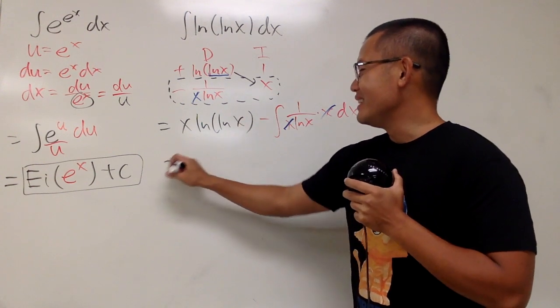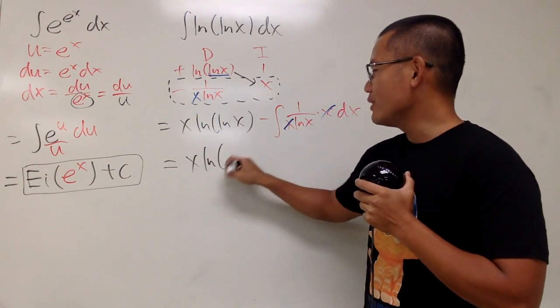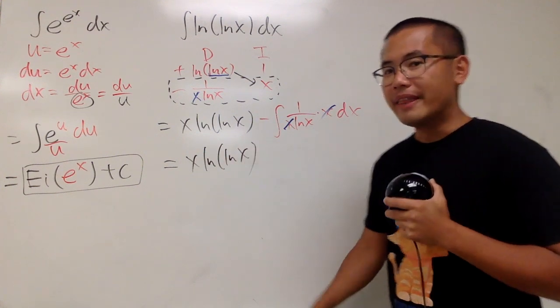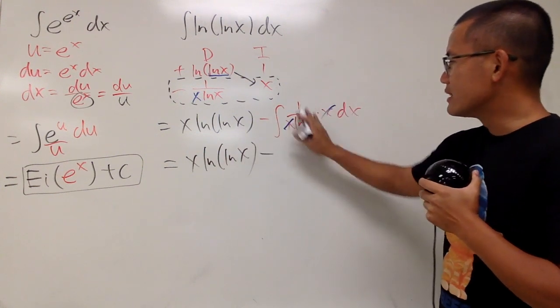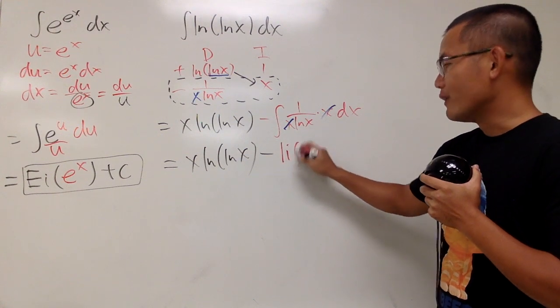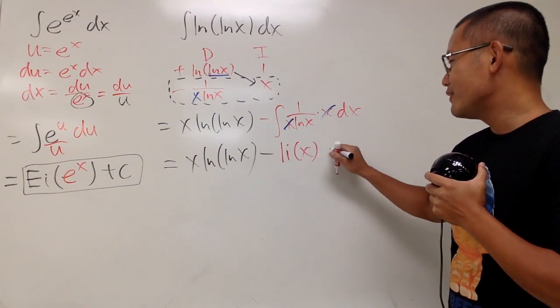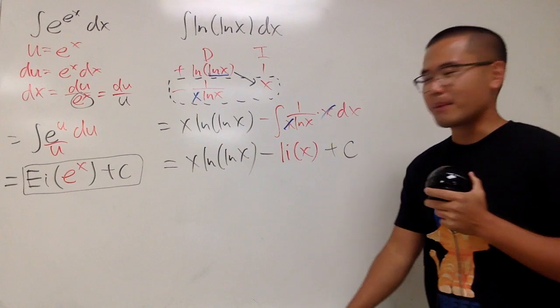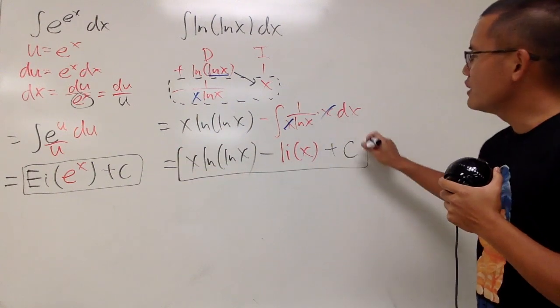So all in all, the answer is x times ln of ln of x, and then minus the answer right here is just Li of x. Very, very good. And of course, put on the plus C. This right here is it.